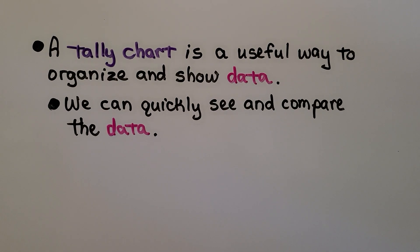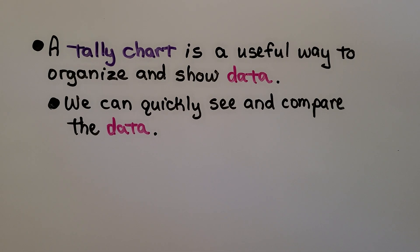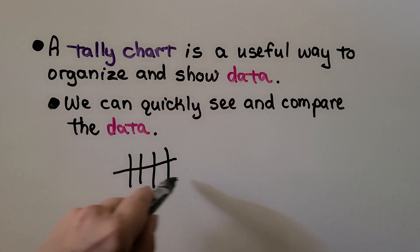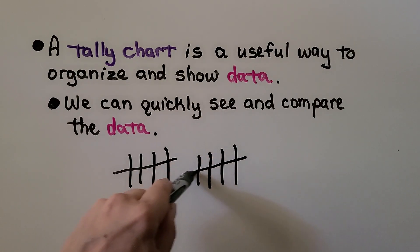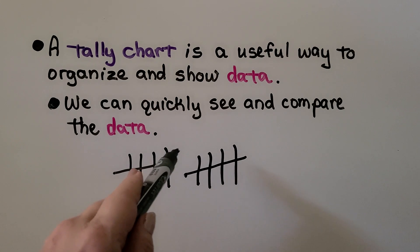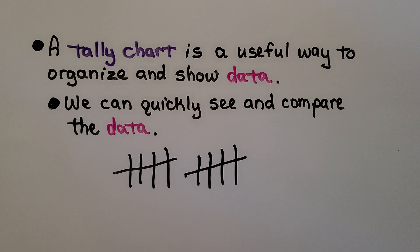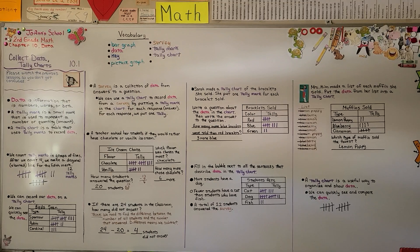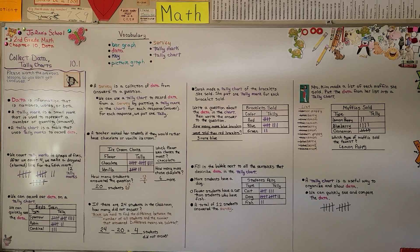A tally chart is a useful way to organize and show data — we can quickly see and compare the data. Remember: when making tally marks, every time you get to a five, cross it with a diagonal line, then skip count by fives — 5, 10. In our next lesson, 10.2, we're going to read picture graphs, which are kind of cool looking. I hope you have a really good day and I hope you'll join me for that lesson. Bye!